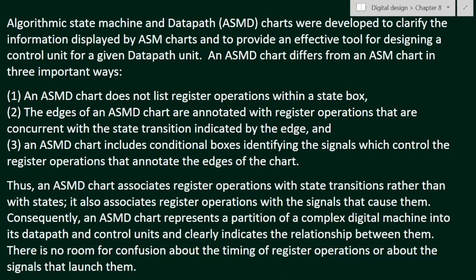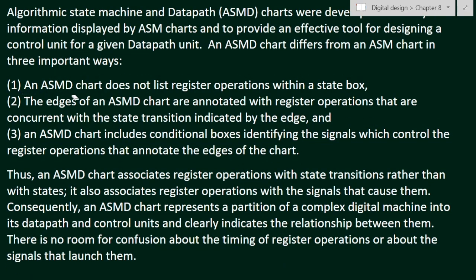An ASMD chart differs from an ASM chart in three important ways. First, an ASMD chart does not list register operations within the state box. Second, the edges of an ASMD chart are annotated with register operations that are concurrent with the state transition indicated by that edge. Third, an ASMD chart includes conditional boxes identifying the signals which control the register operations that annotate the edges of the chart.